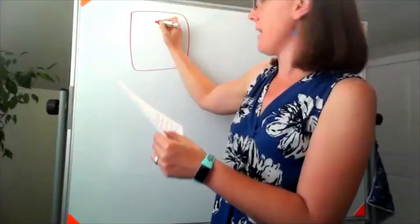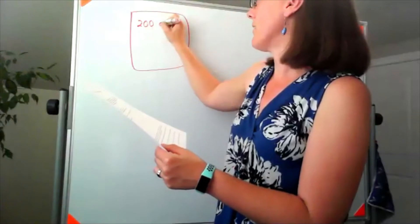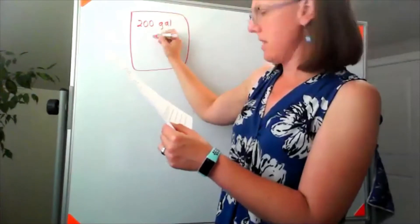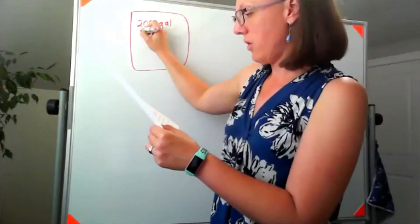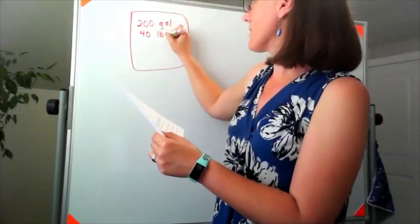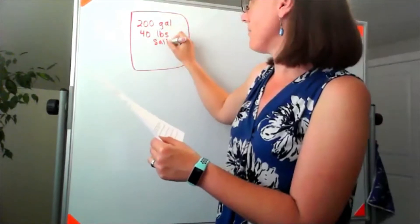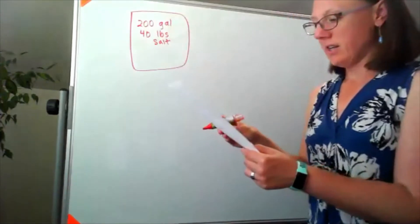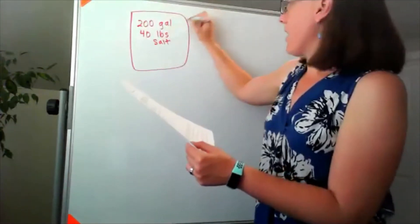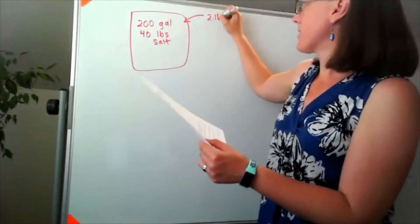We have a tank with 200 gallons of brine that have 40 pounds of salt dissolved, and we've got a mixture coming in and flowing out.